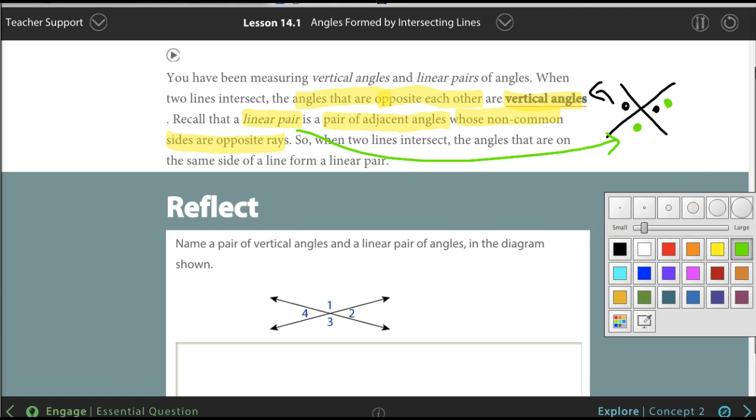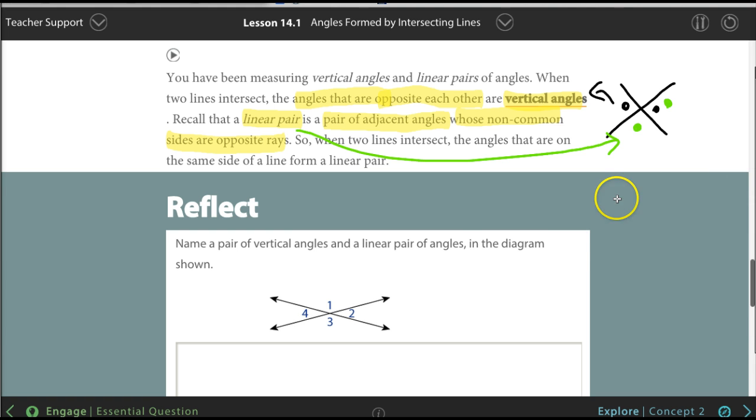Some basic things you have to understand would be, for example, this is a 90-degree angle, that's a perpendicular line. A straight line is 180 degrees. This is 90 degrees. A whole circle would be 360 degrees. This is called a straight angle because it's a straight line. And this is called a right angle because it looks like it's standing up right.